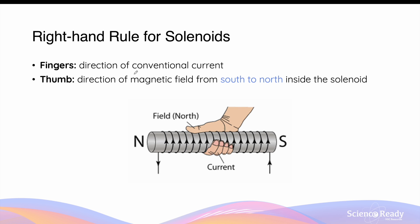Similar to determining the magnetic field direction in a straight current-carrying conductor, we also use the right-hand rule to determine the direction of the magnetic field for solenoids, but we use this rule slightly differently. When we use our right hand, our fingers when curled into a fist form represent the direction of the conventional current that runs through the circular coiled wires. Our thumb in this case represents the direction of the magnetic field that goes through the inside of the solenoid.